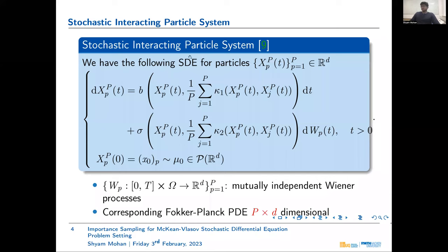The stochastic interacting particle system is a set of P coupled D-dimensional stochastic differential equations, which solve for the particles Xp. The drift and diffusion coefficients are not only dependent on the state of the particle itself, but also on some average over some kernel of the particle along with the other particles in the system. Each particle is driven by its own Wiener process Wp, and the Wiener processes of each particle are mutually independent of each other.